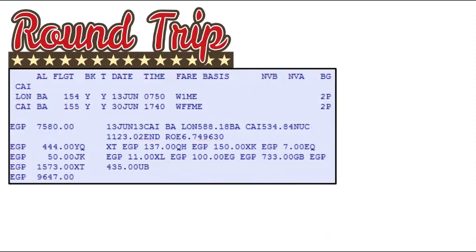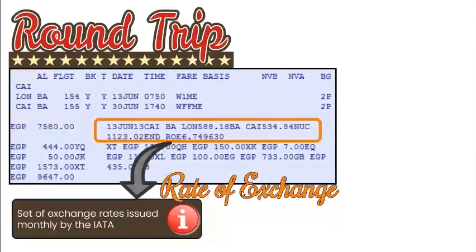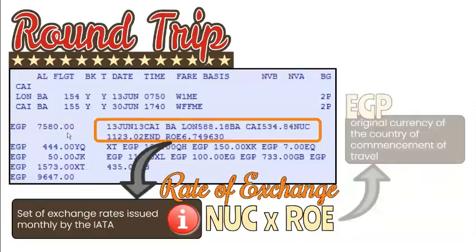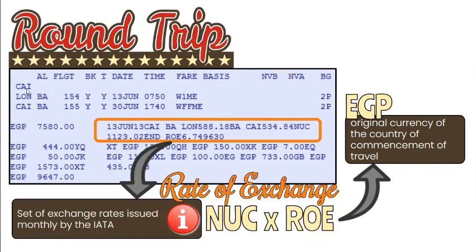At the end of the base fare breakdown is ROE, which stands for Rate of Exchange. IATA provides monthly updates of currency rates of exchange used by the industry for fare construction. For example, during the period when this ticket was purchased, the 1,123.02 NUC was multiplied by an ROE of 6.749630 Egyptian Pounds, giving a total base fare of 7,580 Egyptian Pounds. For international flights, the currency is converted to the currency of the first city or country on the itinerary. In this example, the first flight is from Cairo, Egypt, so the NUC was converted to EGP.